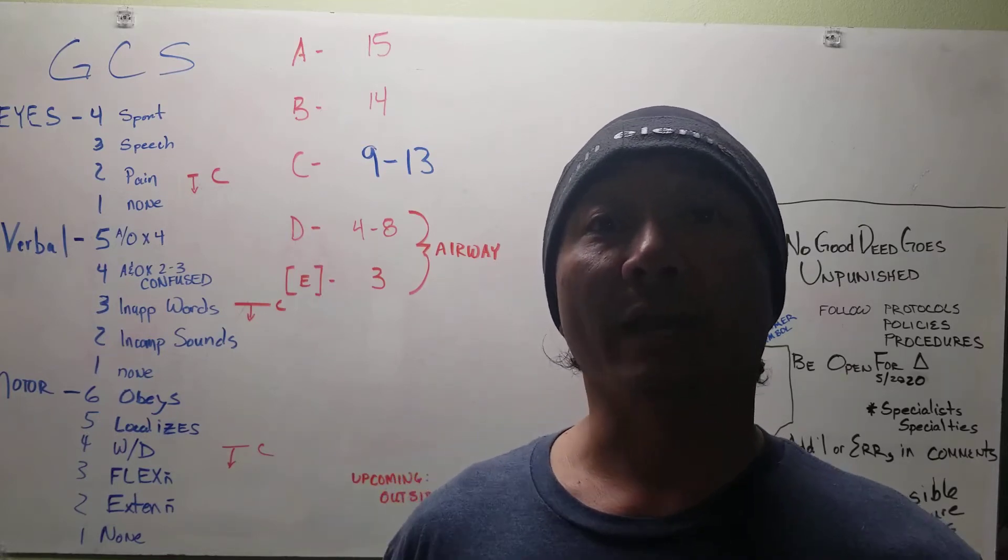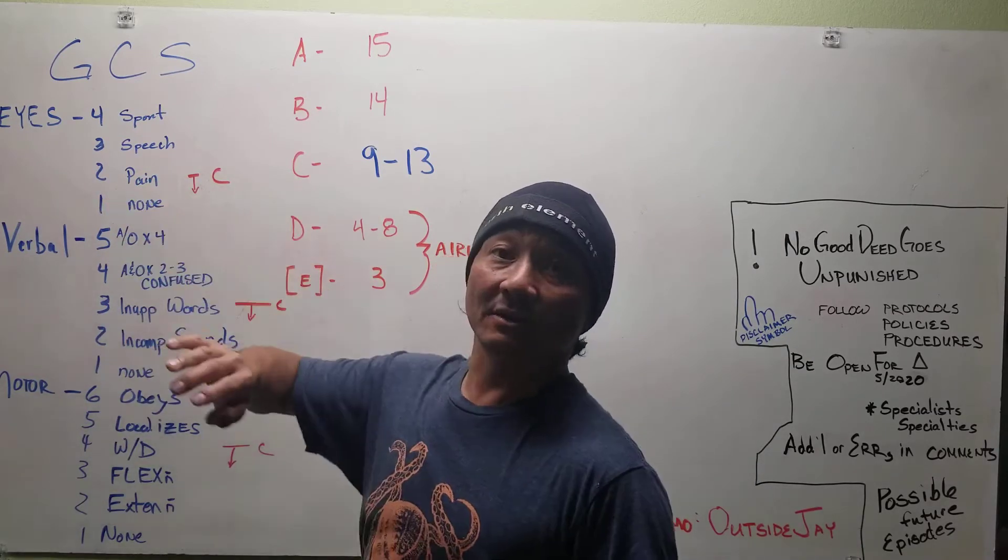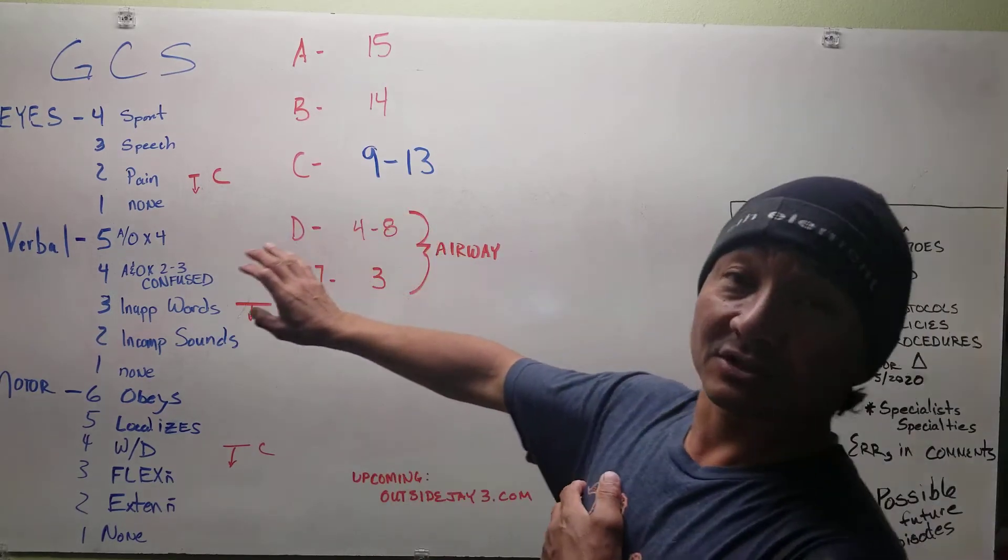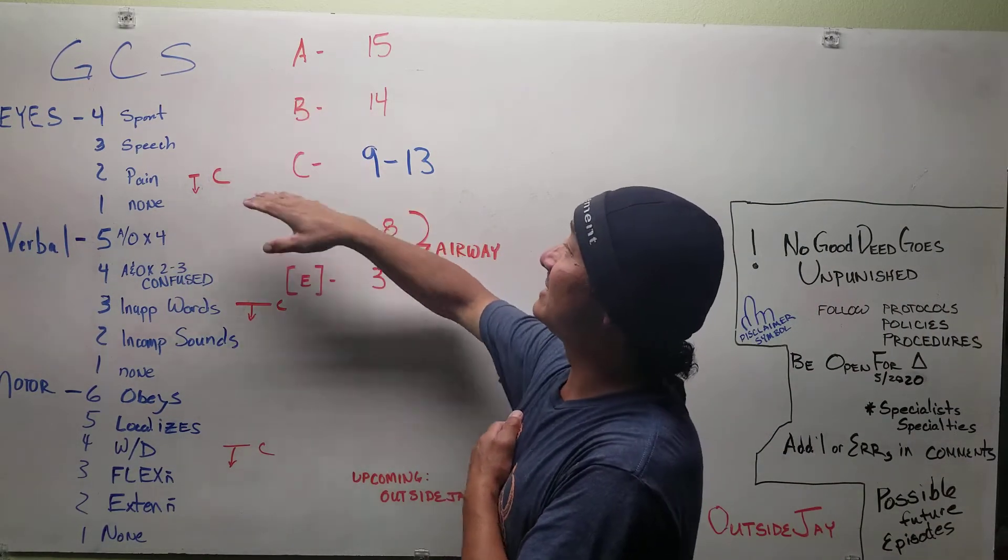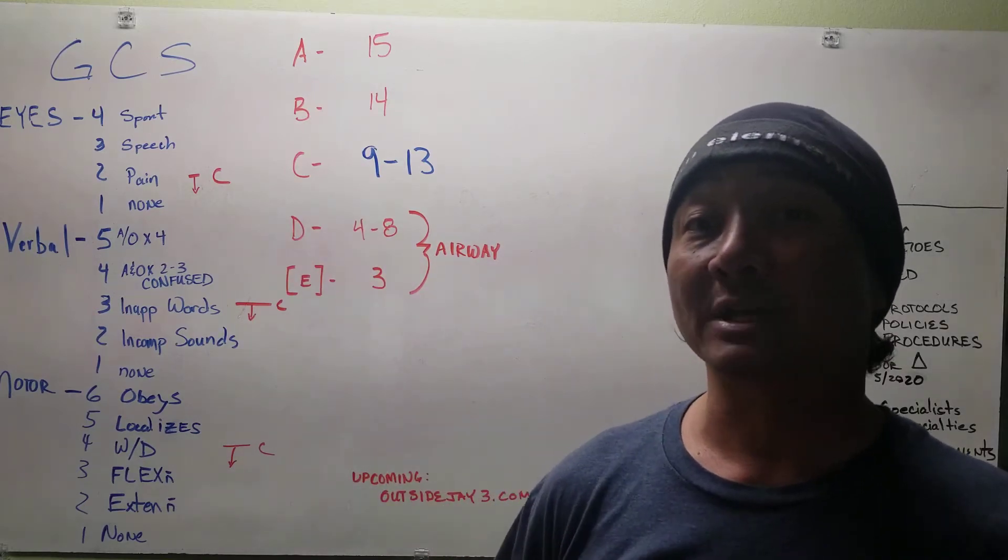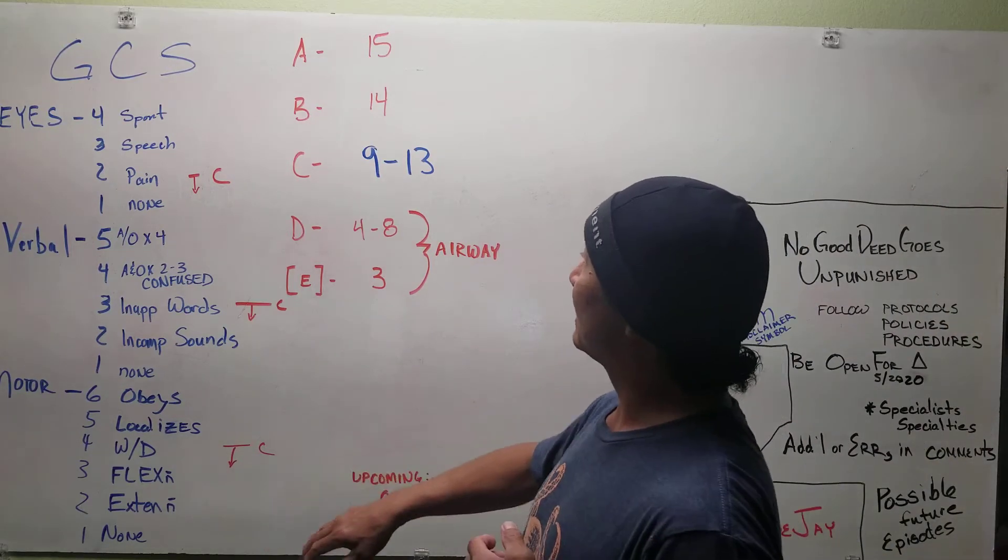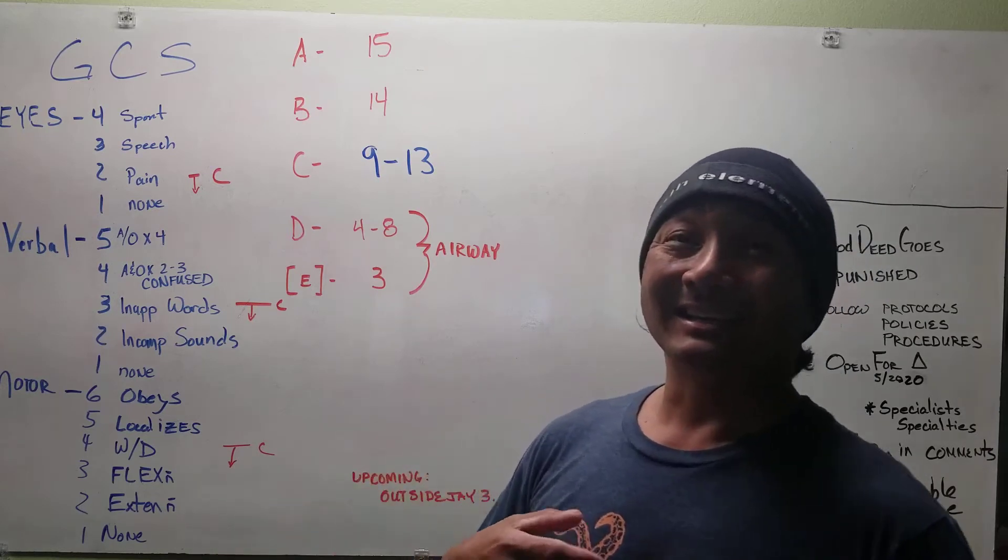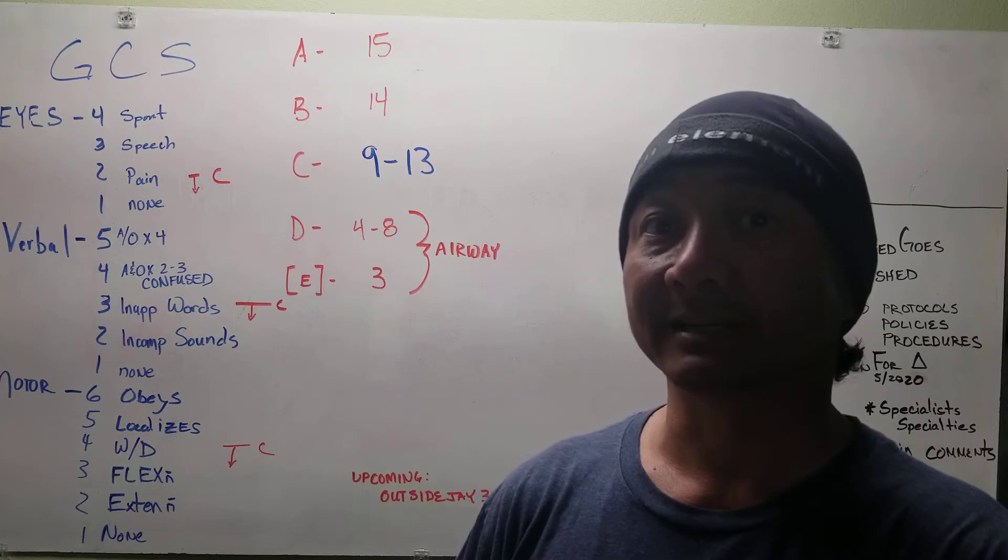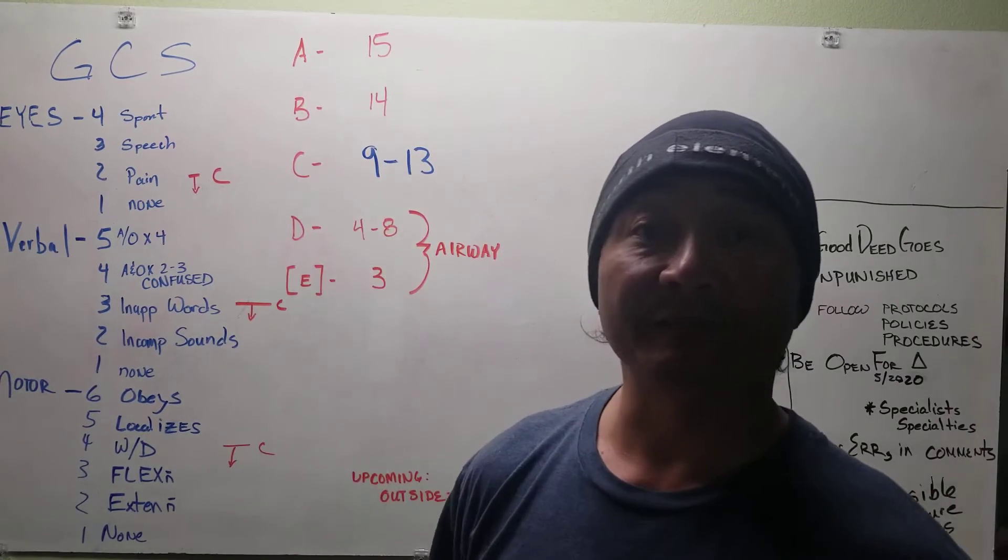Let's go over it real quick. You're going to get a total of fifteen. So four points for eyes, five points for verbal, six points for motor, and I've shown you here I've graded it down to A, B, C, D, and E. That's just for our purposes for this video presentation. That's not something I want you to remember. The grading is because it's not really that important to me.